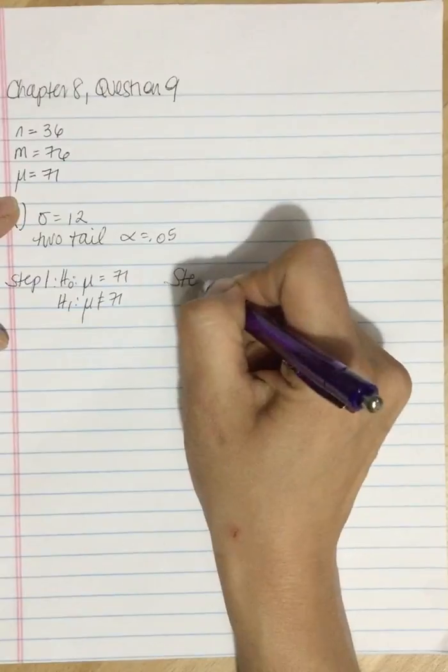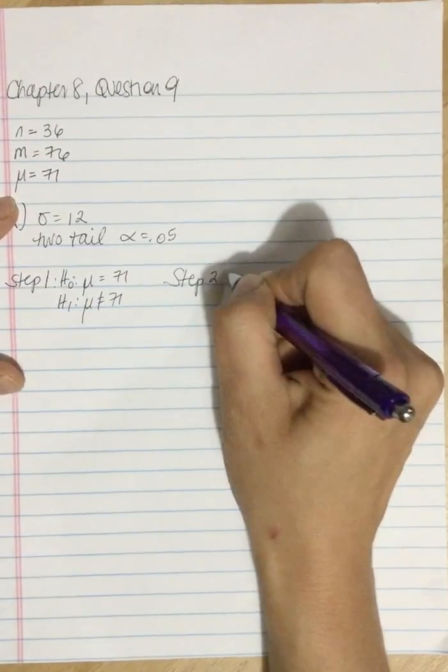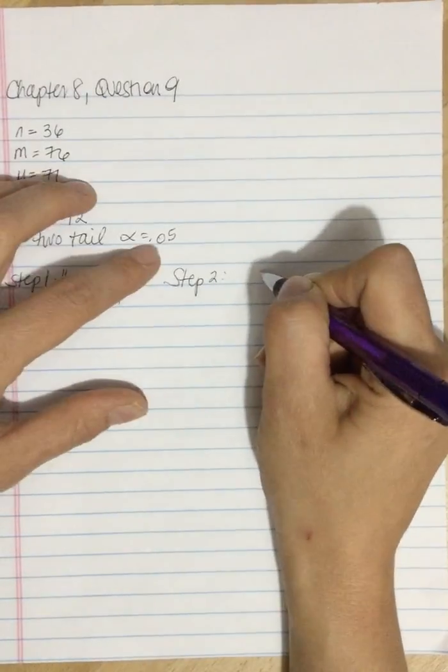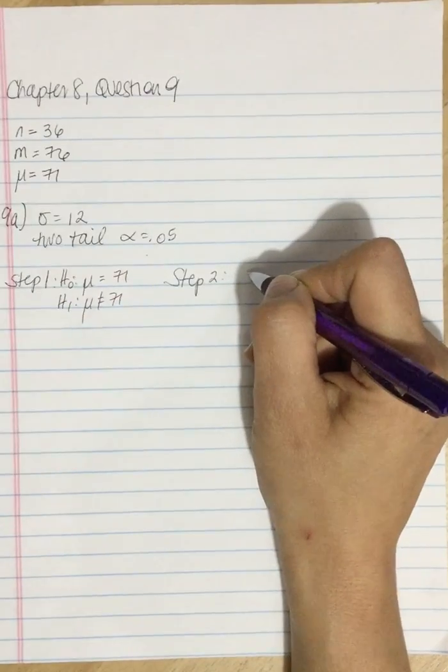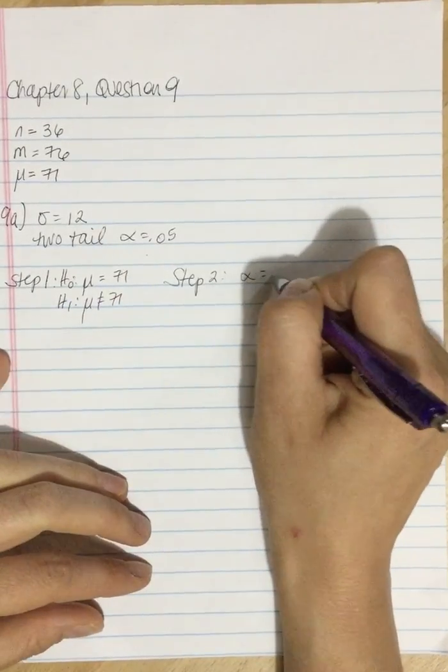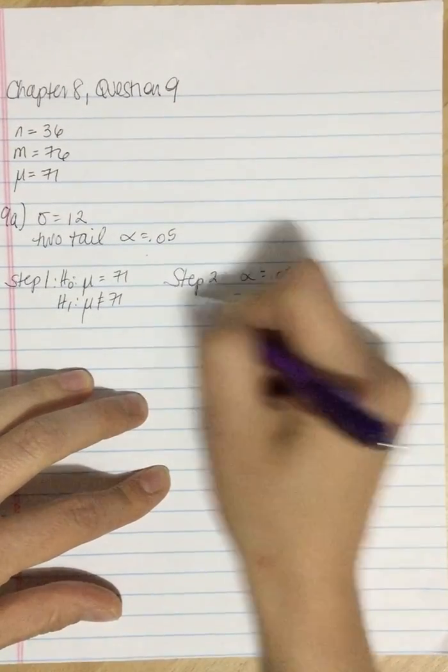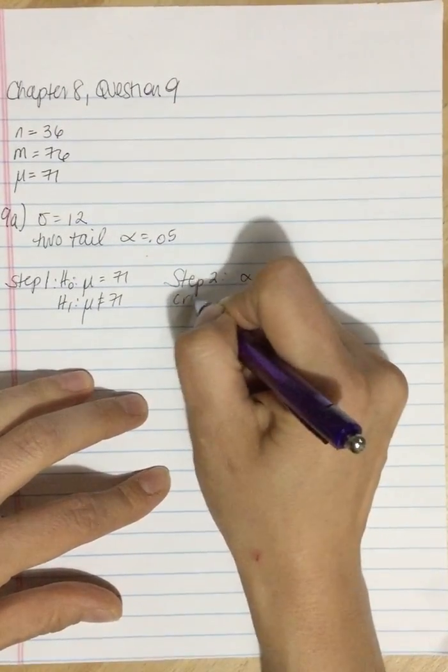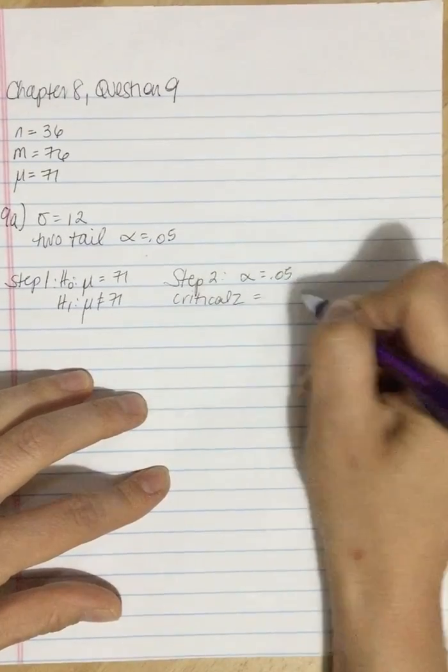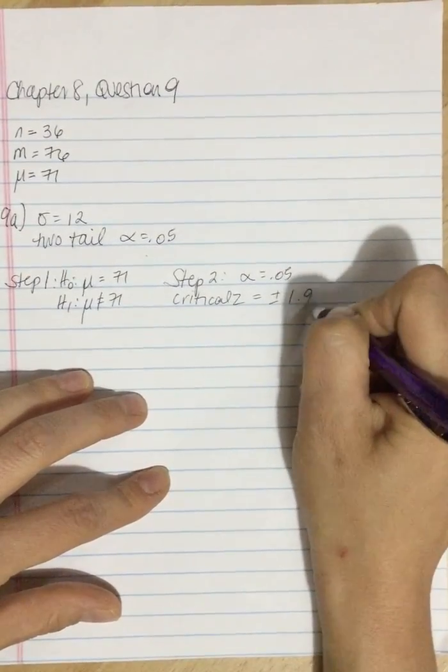Step two, we have a two-tailed test with an alpha of 0.05. If we look in the back of the book in table B1, the z-score, the critical value is plus or minus 1.96.